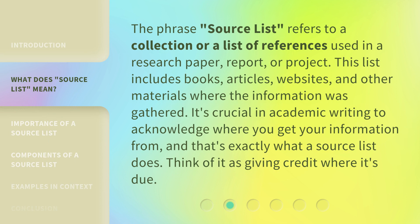The phrase 'Source List' refers to a collection or a list of references used in a research paper, report, or project. This list includes books, articles, websites, and other materials where the information was gathered. It's crucial in academic writing to acknowledge where you get your information from, and that's exactly what a Source List does. Think of it as giving credit where it's due.